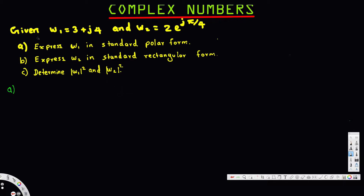Let's look at this problem. The question gives us w1 equal to 3 plus j4 and w2 equal to 2 e to the power j5 over 4. The first question is asking us to express w1 in standard polar form. We have w1 equal to 3 plus j4.